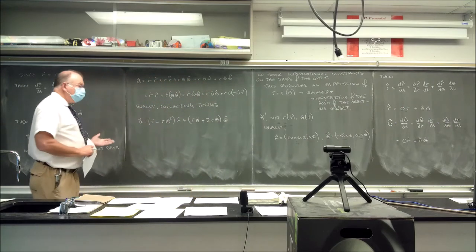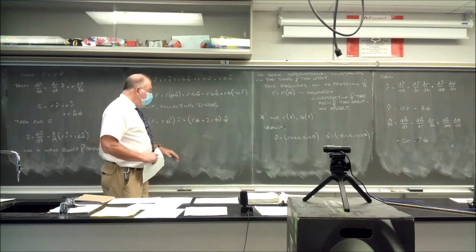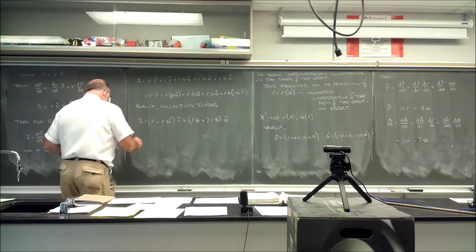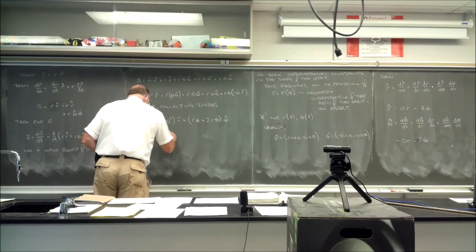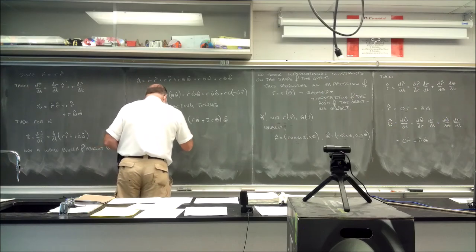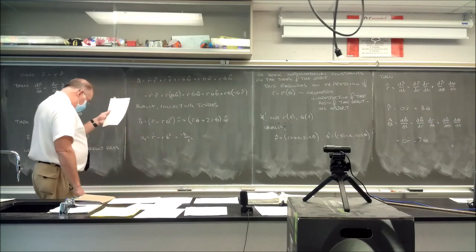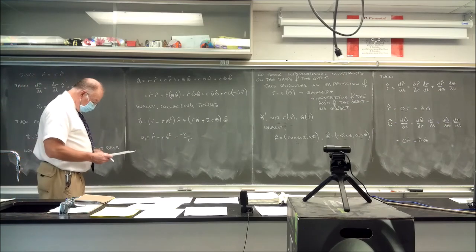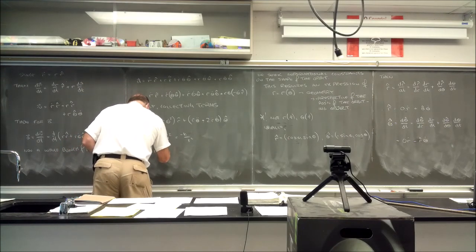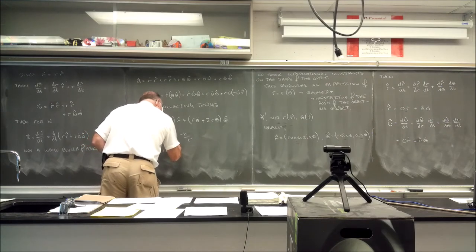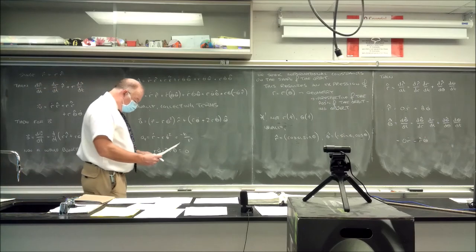So a_r equals r_double_dot minus r·θ_dot² equals −k over r², and a_θ equals r·θ_double_dot plus 2·r_dot·θ_dot equals zero, which comes from the beginning of the derivation. We call these the equations of motion.